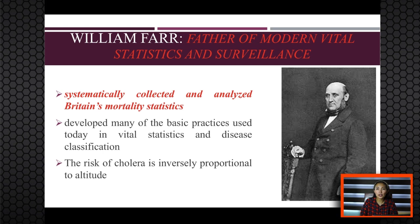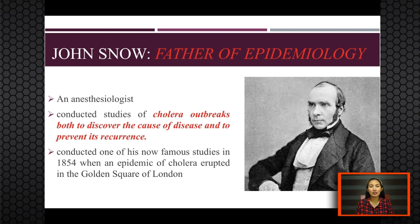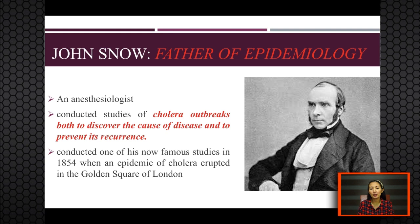Another interesting observation made by Farr is that the risk of cholera is inversely proportional to altitude. In the 1850s, an anesthesiologist named John Snow conducted several investigations on cholera, even prior to the invention of the microscope. He spent almost his entire medical career studying cholera, conducting his studies for two reasons: to discover the cause of the disease and to find ways to prevent it from reoccurring. He conducted one of his now-famous studies in 1854 when an epidemic of cholera erupted in the Golden Square of London.